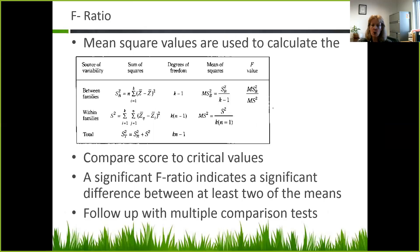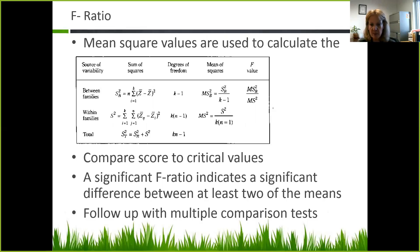When talking about the F ratio, mean square values are used to calculate it. You'll likely rely on SPSS to calculate them, and after getting those scores, you compare them to critical values — available in your textbook appendix, but your SPSS printout makes all that information available in one place. A significant F ratio indicates a significant difference between at least two of the means. You then have to do follow-up with multiple comparison tests to know the direction and nature of those differences between the different groups.